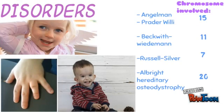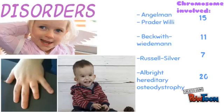There are certain disorders associated with genomic imprinting: Angelman syndrome and Prader-Willi syndrome, which occur on chromosome 15; Beckwith-Wiedemann syndrome, which occurs on chromosome 11; Russell-Silver syndrome, which occurs on chromosome 7; and Albright hereditary osteodystrophy, which occurs on chromosome 20.